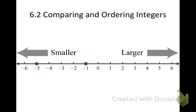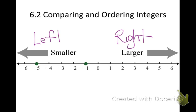We're going to compare and order integers. We're going to draw our horizontal number line. As you move to the right on your number line, your number is going to get larger. And as you move to the left on your number line, your number is going to get smaller. It doesn't matter where you start, it matters where you end.